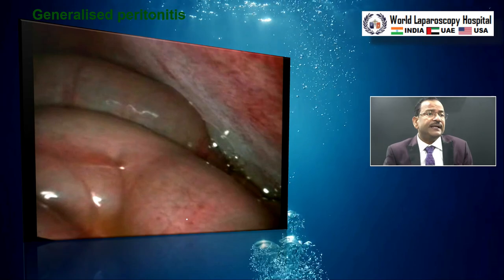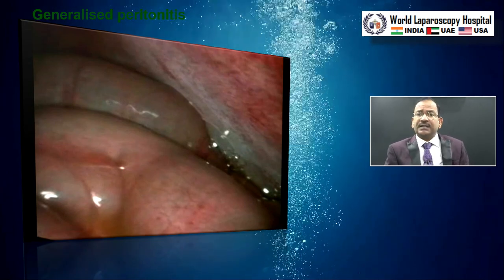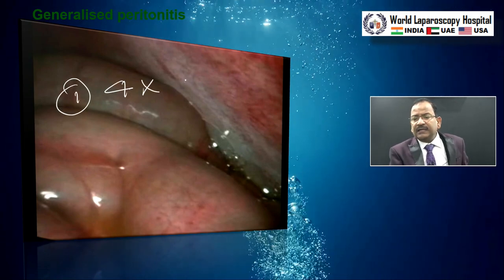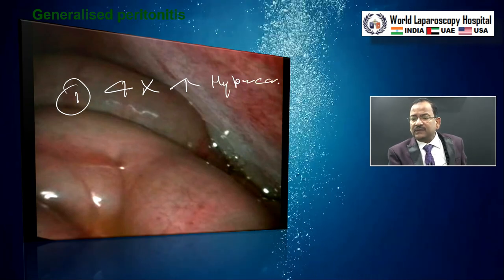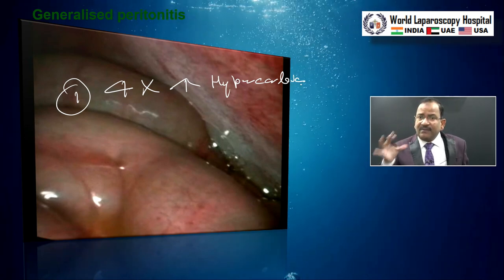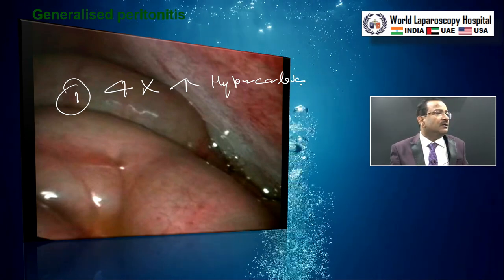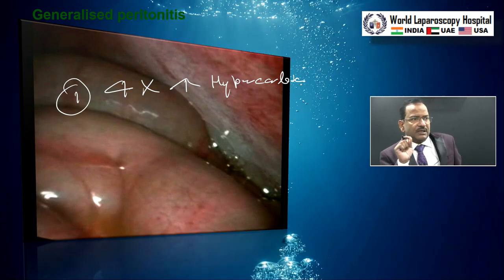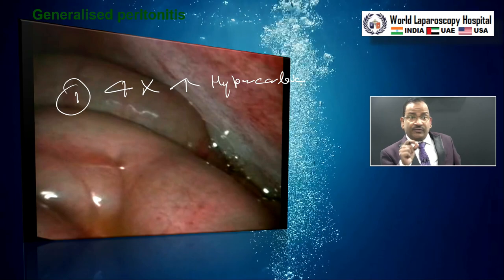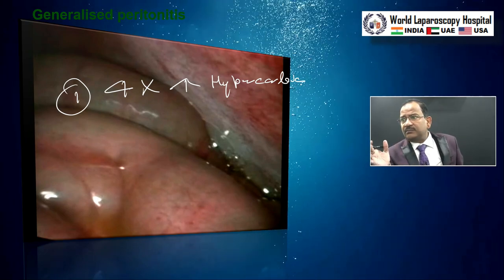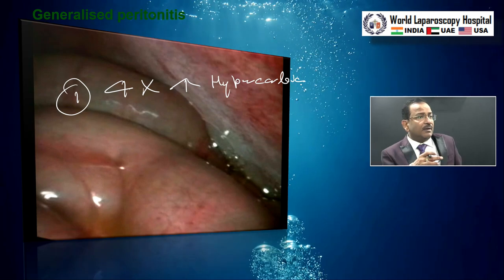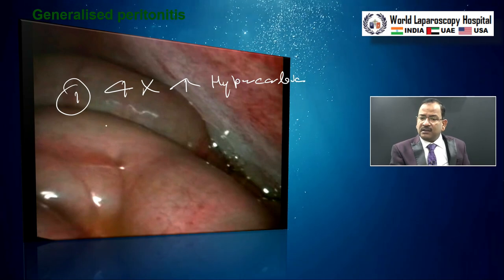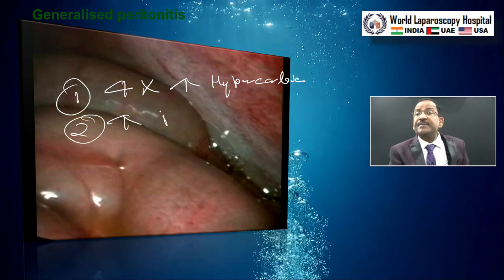Why is generalized peritonitis a contraindication? There are many problems. The first problem is a four-times increase in hypercarbia. Hypercarbia increases faster because this inflamed peritoneum absorbs CO2 more. You know, when nephrologists are prescribing peritoneal dialysis, they give a strict caution to the patient: if you have fever or abdominal pain, stop the peritoneal dialysis, because the inflamed peritoneum will completely absorb the dialysis solution. So there will be four times more hypercarbia. After that, there is increased bacteremia.